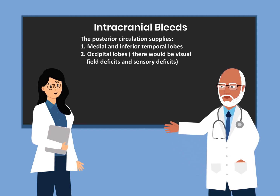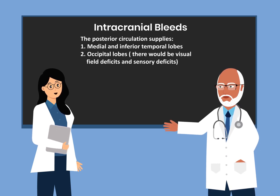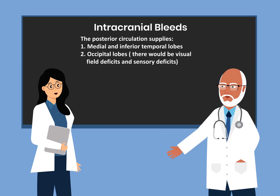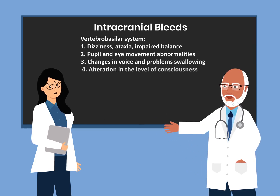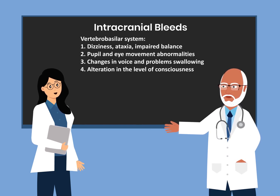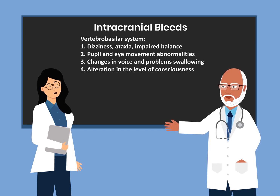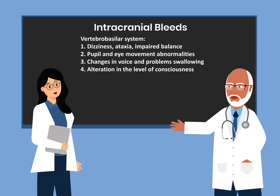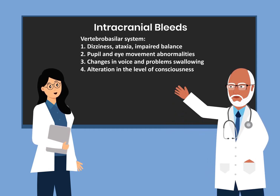The posterior circulation supplies the medial and inferior temporal lobes and also the occipital lobes. Any deficit to the posterior circulation would result in visual field effects and sensory deficits. If there is a problem with the vertebrobasilar system, this would result in dizziness, ataxia, impaired balance, pupil and eye movement abnormalities, changes in voice and problems swallowing, and alteration in the level of consciousness.